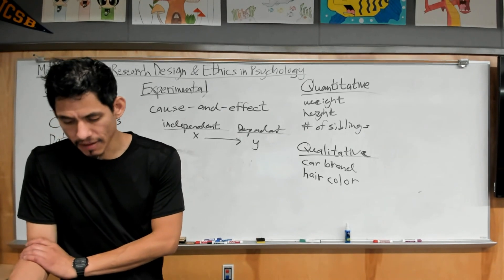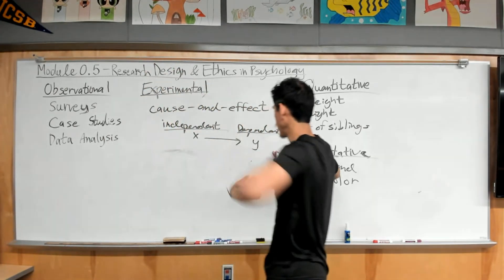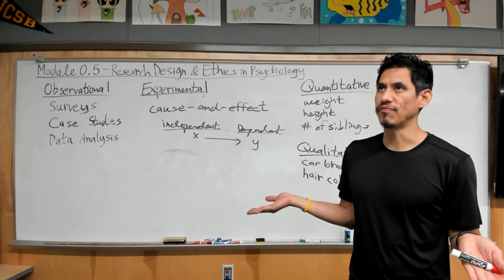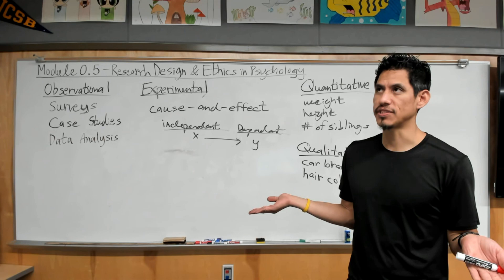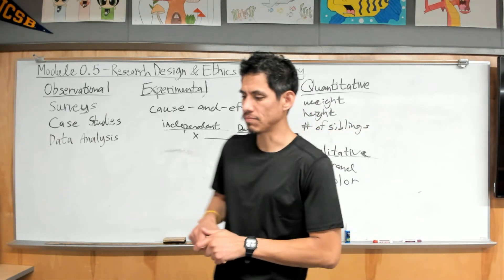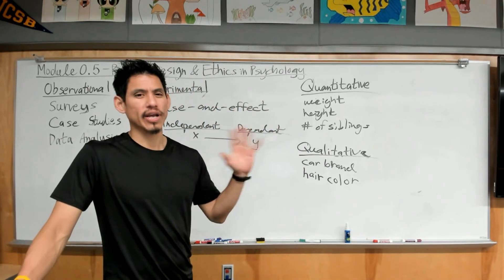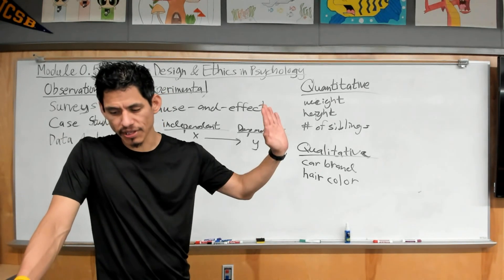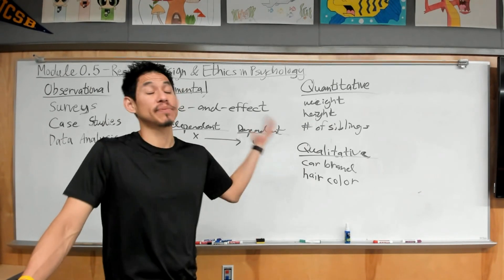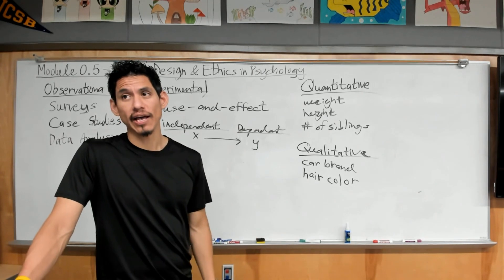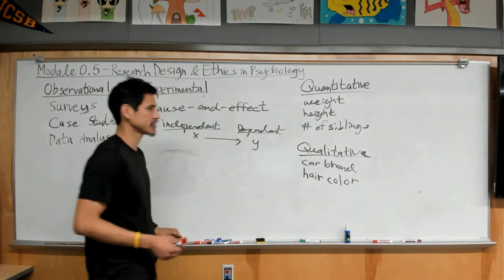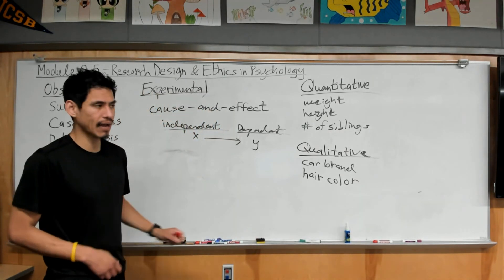No matter what question we're studying, there are always going to be variables we have to consider, which we know as confounding — and there are ways we can reduce confounding, but it's something that always has to be considered. This is really why you'd want to do things in a controlled environment or laboratory setting.